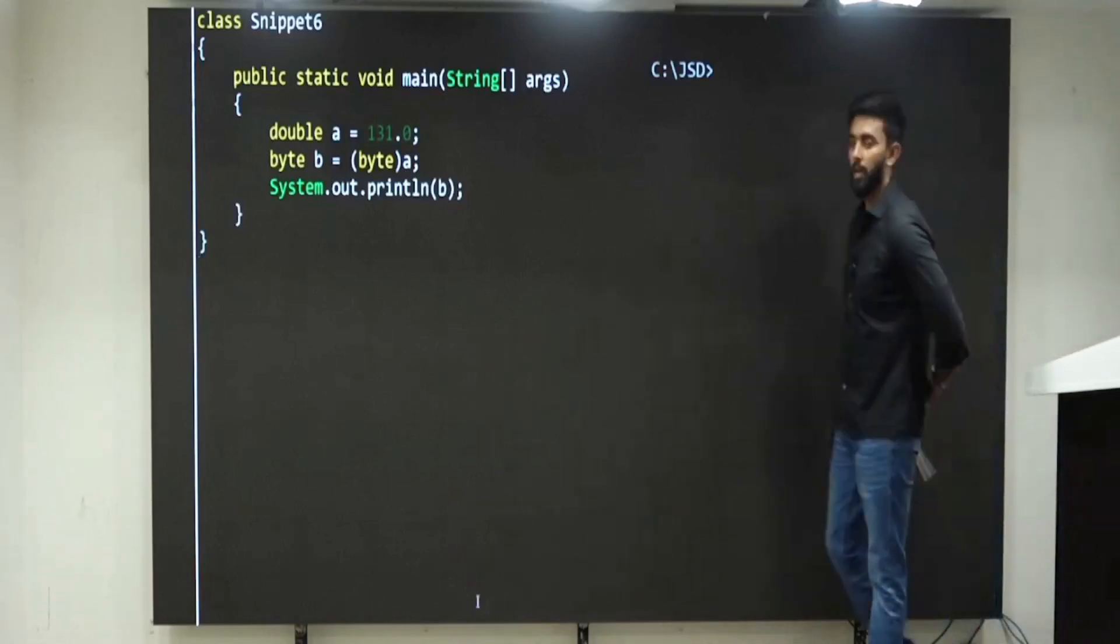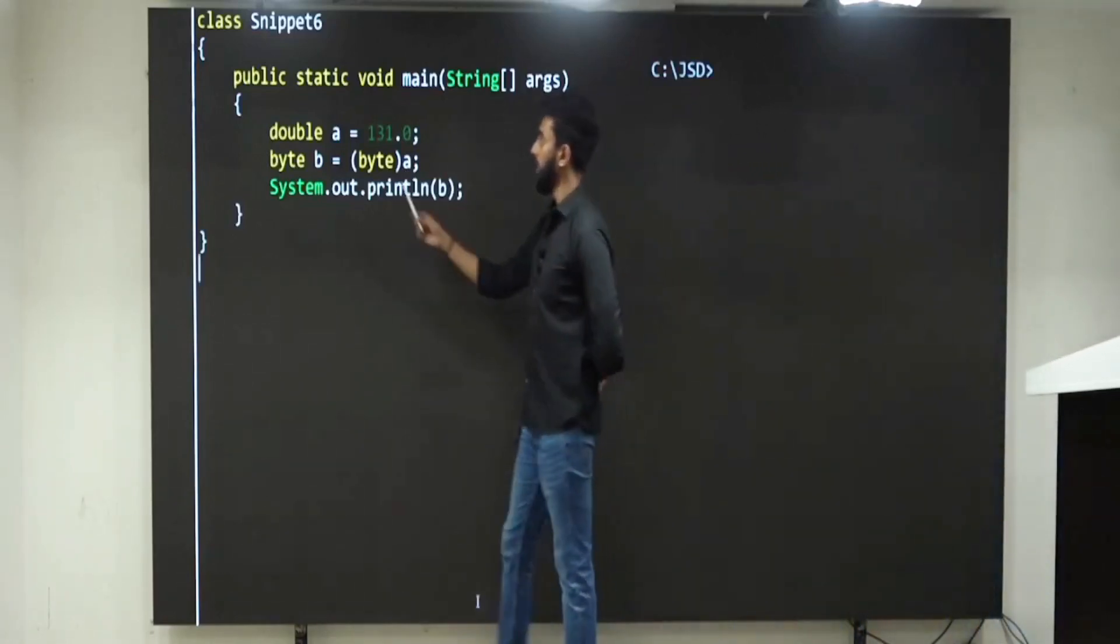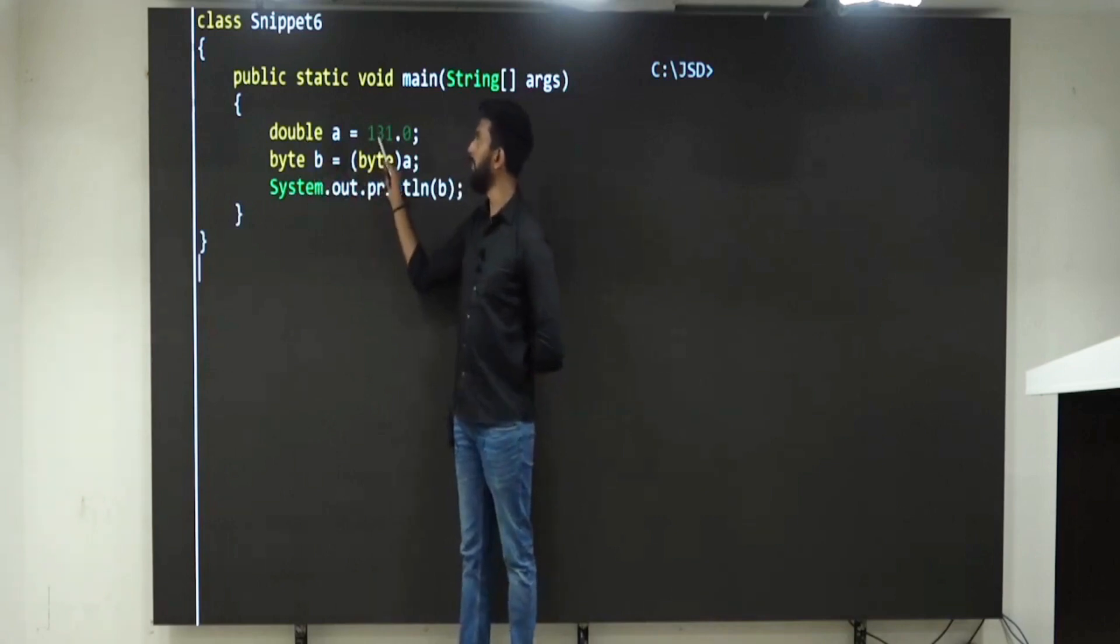This is to check whether you know typecast. Now tell me, double A equal to 131.0. Correct. Double can store 131 easily.